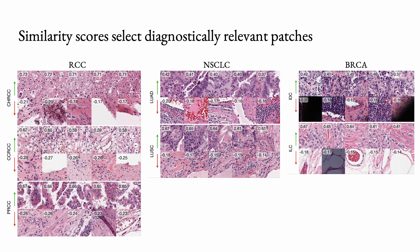For each of the 3 downstream tasks, we randomly select a whole-site image of each subtype from the in-house test set. Patches are ranked by their cosine similarity scores with the prompt embedding of the ground truth class. Within each subtype, the top row shows the patches with the highest similarity scores and the bottom row shows the ones with the lowest. A board-certified pathologist confirms that relevant morphological patterns to each class are selected by MI0 corresponding to high similarity scores, while low scores generally correspond to debris or normal tissue irrelevant to diagnosis.